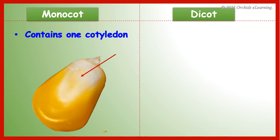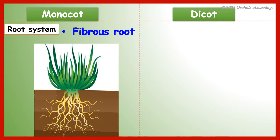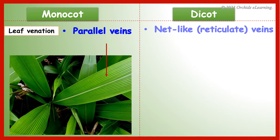Monocot contains 1 cotyledon, whereas dicot contains 2 cotyledons. Monocot plants have a fibrous root system, while dicot plants have a taproot system. Monocot plant leaves display parallel venation, whereas dicot plant leaves display reticulate venation.